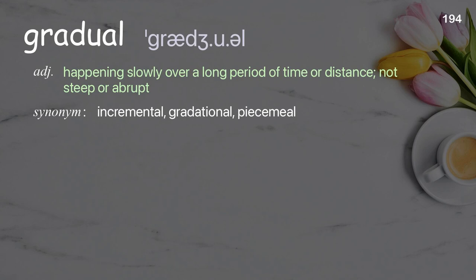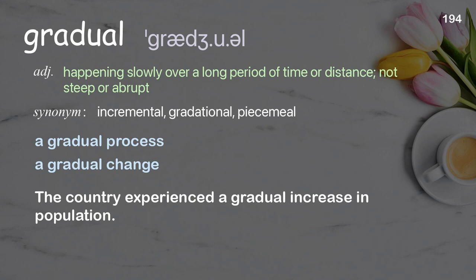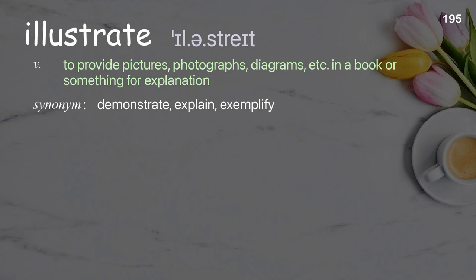Gradual: happening slowly over a long period of time or distance; not steep or abrupt. Examples: a gradual process; a gradual change; the country experienced a gradual increase in population.